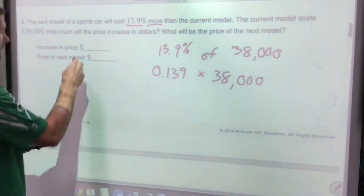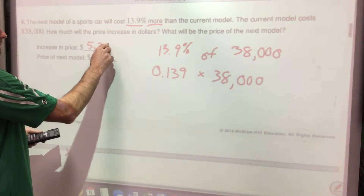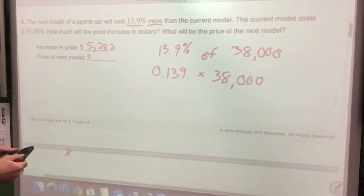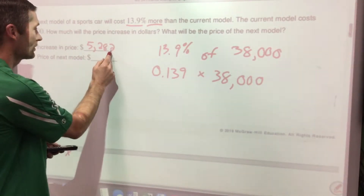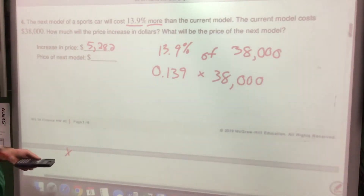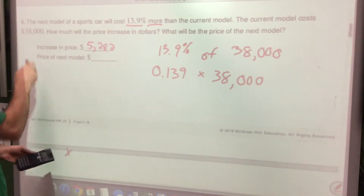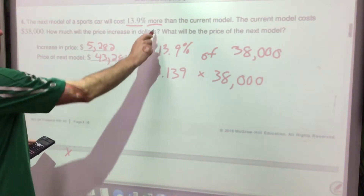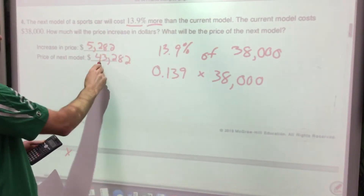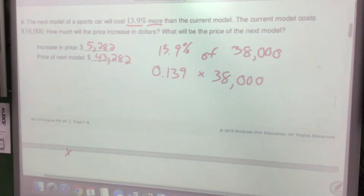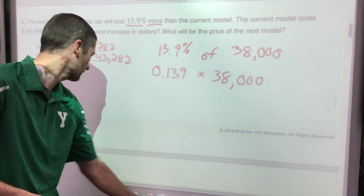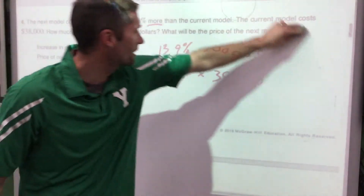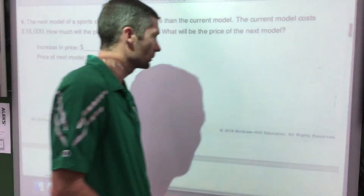The increase is $5,282. The next model is not $5,282 — it's $5,282 more than $38,000. Add those together: $38,000 + $5,282 = $43,282. That makes sense — cars usually increase in price each year. Always go back and re-read the question to make sure you answered exactly what it asked.